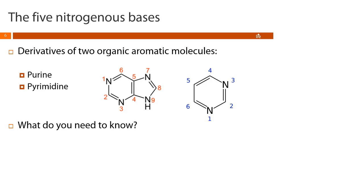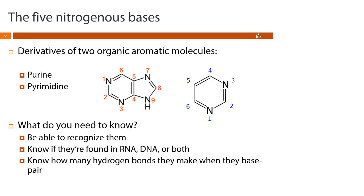Now we'll go over each of the five nitrogenous bases. You need to be able to recognize them — you don't have to memorize their structures. On the exam, all five structures will be given, and you need to label them with their names, know which bases are found in RNA, which in DNA, and which in both, and know how many hydrogen bonds they make when they base pair. This will make more sense when we get into the secondary structure of nucleic acids.